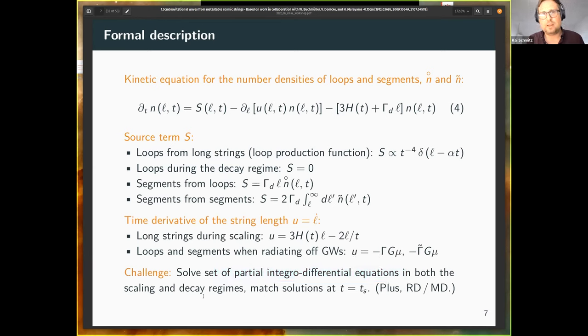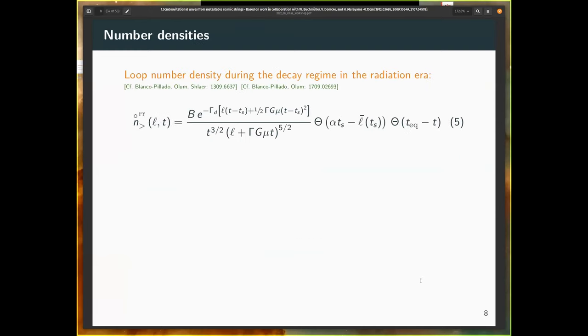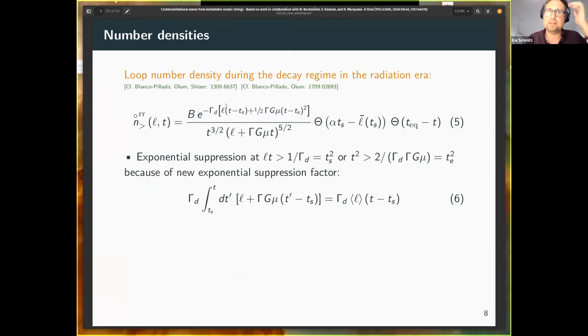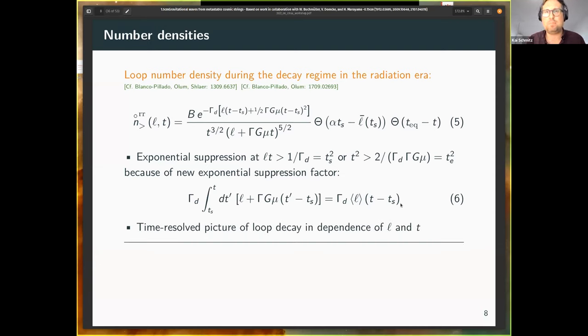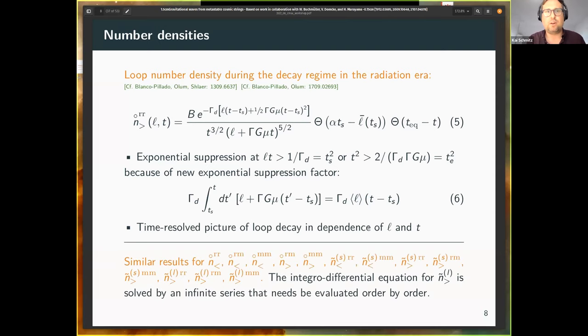We're running out of time. I think I'm almost done. I just want to flash at you one result for such a number density. The new observation is that the number densities begin to become exponentially suppressed as soon as basically the lifetime of the network is reached. You have a new exponential function inside these number densities, which is given basically as the averaged number of decay events for some average loop length times the time interval since the beginning of this decay regime. Now we have a time-resolved picture of loop decay, in dependence of the loop length and time, which had not been achieved before. We do this for all the number densities that we need to consider, loops, segments, and so on.